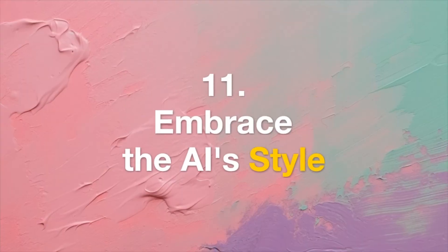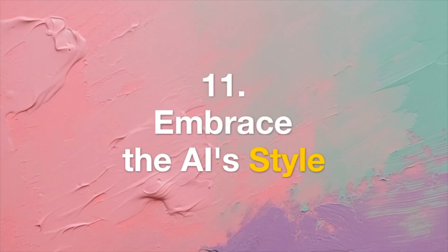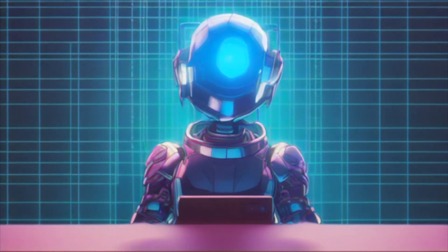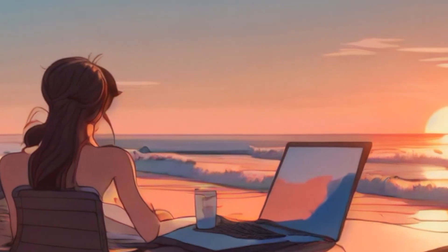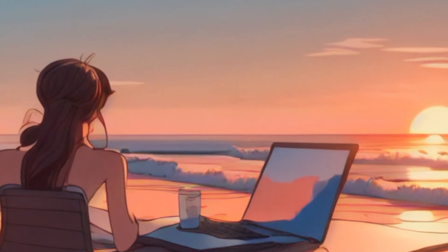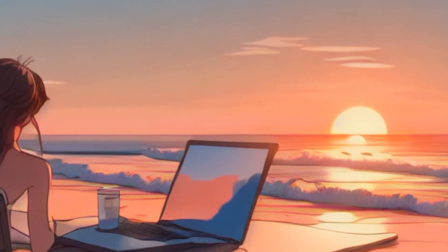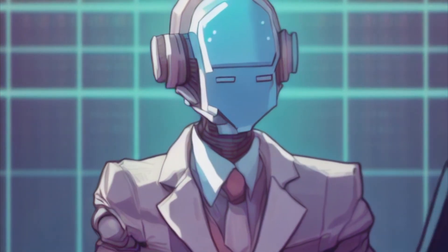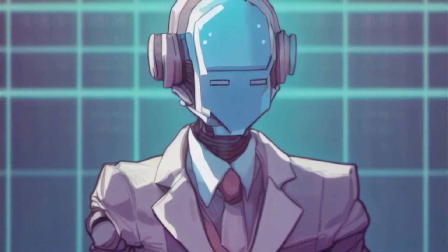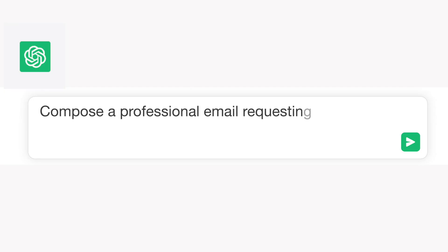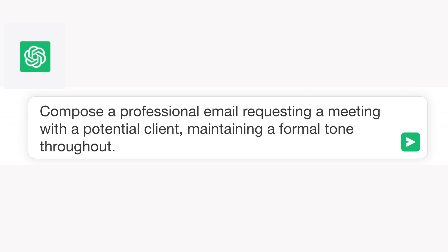Tip 11: Embrace ChatGPT's Style. ChatGPT has a distinctive writing style. Embrace this uniqueness and leverage it to your advantage. If you desire a formal tone, explicitly communicate it in the prompt. For example: "Compose a professional email requesting a meeting with a potential client, maintaining a formal tone throughout."